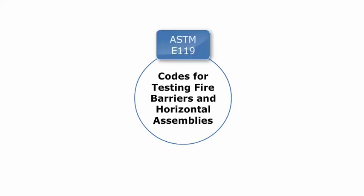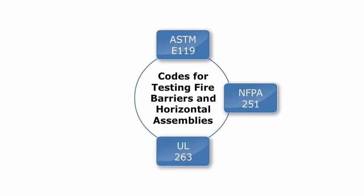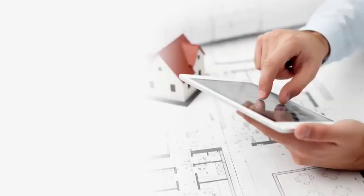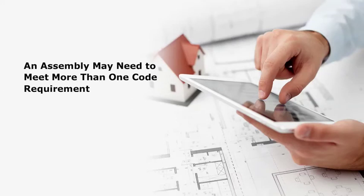Depending on the codes, fire barriers and horizontal assemblies are tested using ASTM E119 Standard Test Methods for Fire Tests of Building Construction and Materials, NFPA 251 Standard Methods of Tests of Fire Resistance of Building Construction and Materials, or UL 263 Standard for Fire Tests of Building Construction and Materials. They may also be required to pass NFPA 221 Standard for High Challenge Fire Walls, Fire Walls, and Fire Barrier Walls.